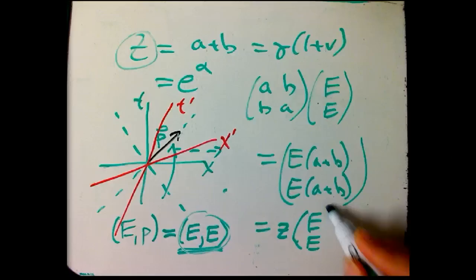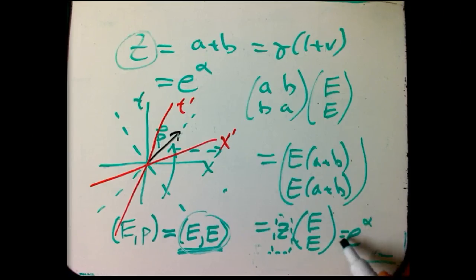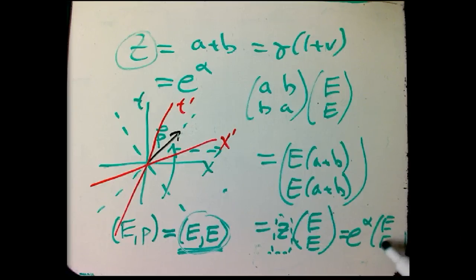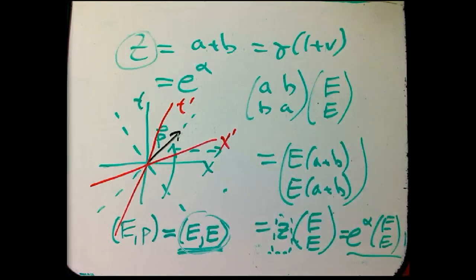and so that's just Z times E, it still has to be of the same form where energy and momentum are equal, and the multiplier factor for momentum is exactly Z, or if we like to write things in terms of the additive parameter alpha, it's E to the alpha, E,